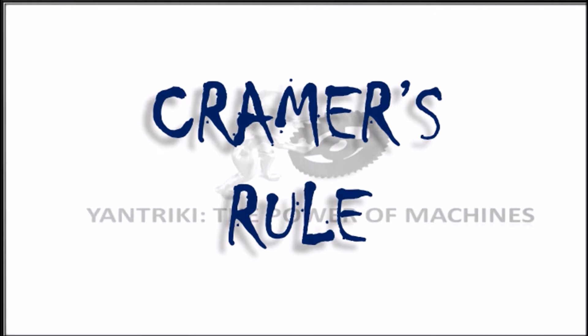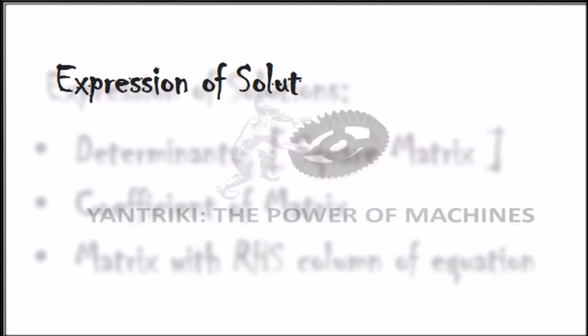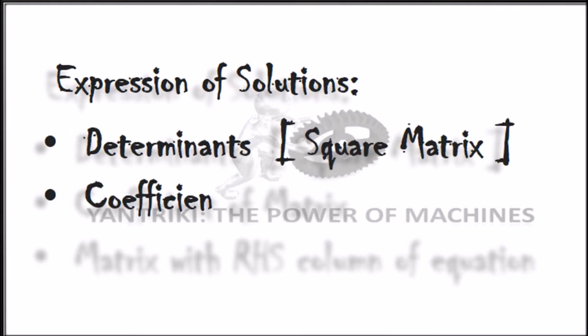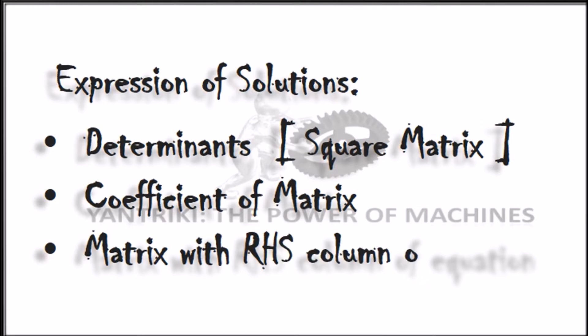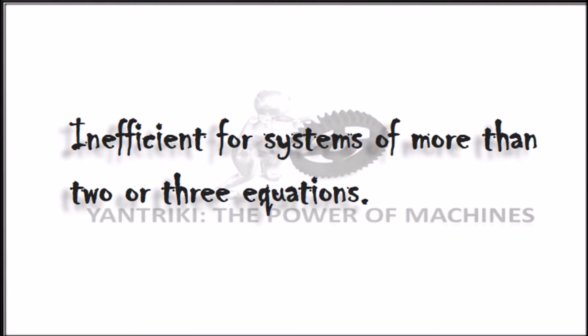In this video, I will discuss Cramer's Rule. In linear algebra, Cramer's Rule is an explicit formula for the solution of a system of linear equations with as many equations as unknowns, valid whenever the system has a unique solution. It expresses the solution in terms of the determinants of the coefficient matrix and of matrices obtained from it by replacing one column by the vector of right-hand sides of the equations. Computationally, Cramer's Rule is very inefficient for systems of more than two or three equations.